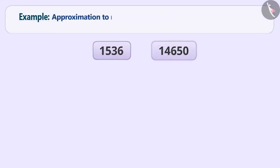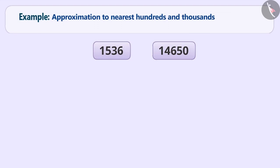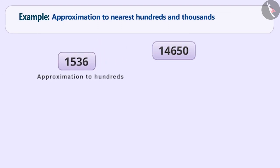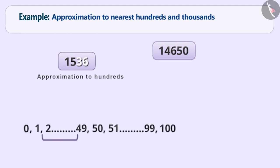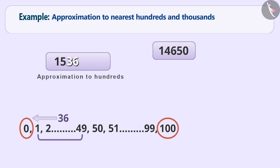Approximate the following numbers to hundreds and thousands. Focus on the last two digits while approximating to nearest hundreds. If the number formed by these digits is among any number from 1 to 49, then this number is closer to 0 than 100. Therefore, approximate it by writing 0 in its place.